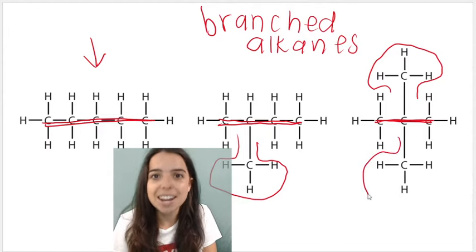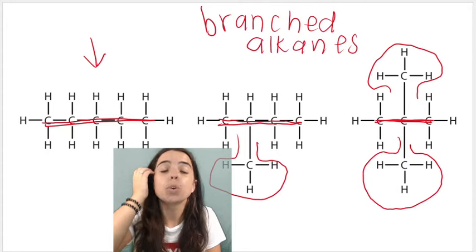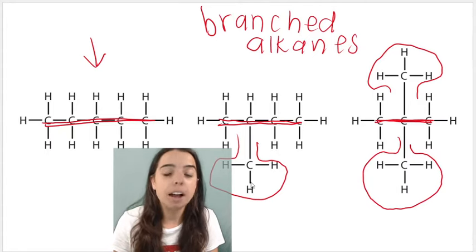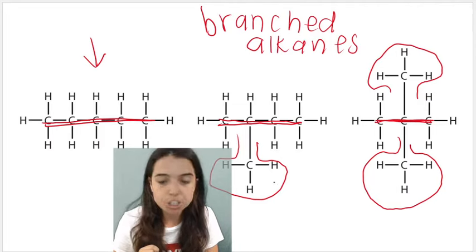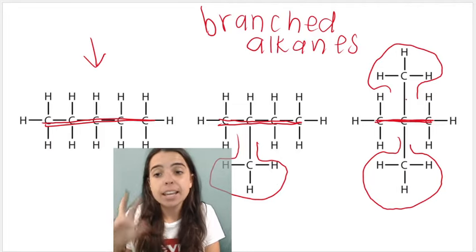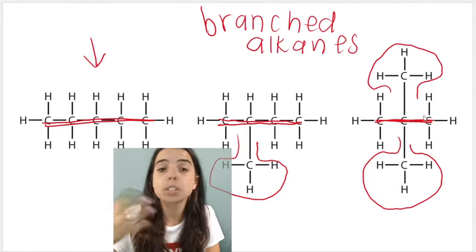And here is another side branch. Again, also referred to as an alkyl group. So the alkane in the middle has one substituent or side branch. The alkane on the far right has two side branches or substituents.